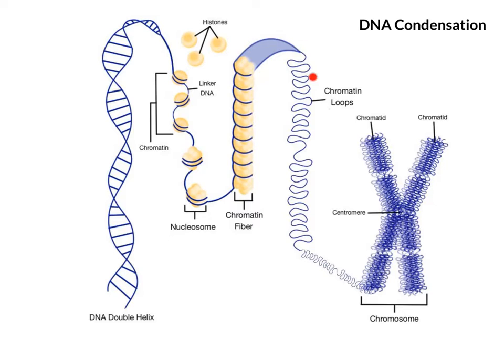Chromatin twists and folds into chromosomes during a process called DNA condensation. The DNA molecule condenses and gets tightly wound around itself.